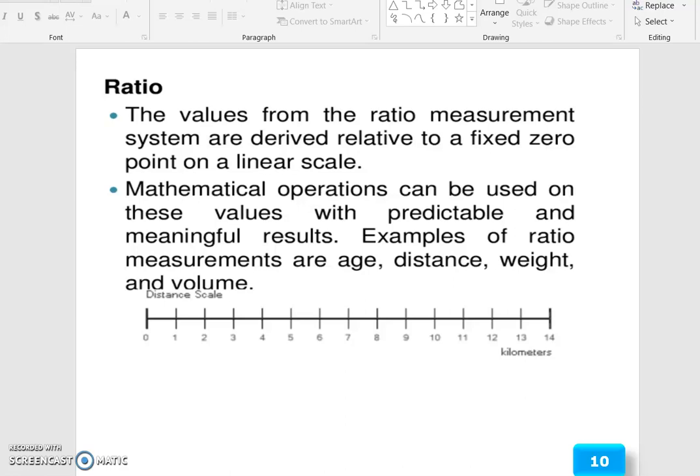In ratio based measurements, the values from the ratio measurement system are derived relative to a fixed zero point on a linear scale. Mathematical operations can be used on these values with predictable and meaningful results. Examples of ratio measurements are age, distance, weight, and volume. See from 0 to 14 kilometers on the distance scale.